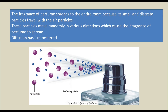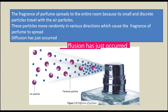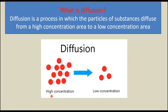We can smell the fragrance from the perfume in the entire room and not just at the corner of the room because the perfume's small and discrete particles travel with the air particles. These particles move randomly in various directions, which causes the fragrance of perfume to spread. Diffusion has just occurred. Diffusion is a process in which the particles of substances diffuse from a high concentration area to a low concentration area.